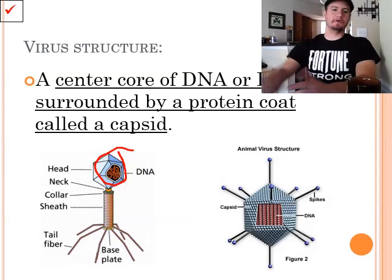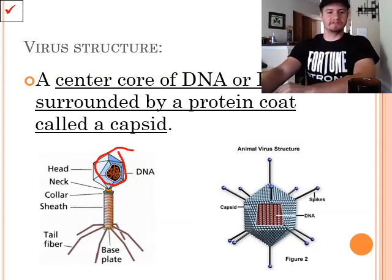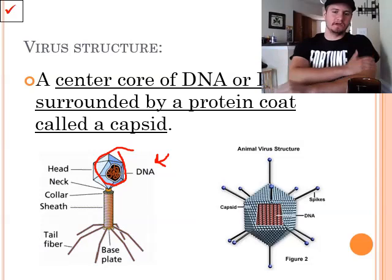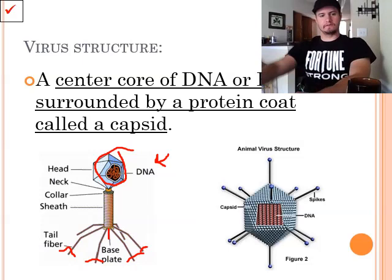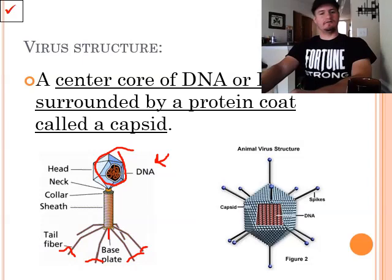Now we have a wide variety of different types of viruses as well as structures. For example, this guy right here looks more like a spider. Now these guys are more or less giant needles. So they have our head or the capsid, the neck, the collar, the sheath, the tail fibers, and the base plate. So they'll latch onto something with these tail fibers. And then inside here, we have a needle. So the needle will inject the DNA into the host cell, which causes some serious damage.